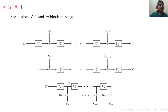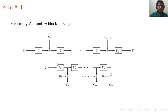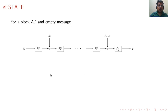We also provide a smaller variant called S-STATE, which replaces the full block cipher E with a round-reduced block cipher F that always uses tweak 15. This round-reduced version is used to process intermediate blocks, while the last block processing in both associated data and message always uses the full block cipher. The encryption part in S-STATE is similar to STATE.